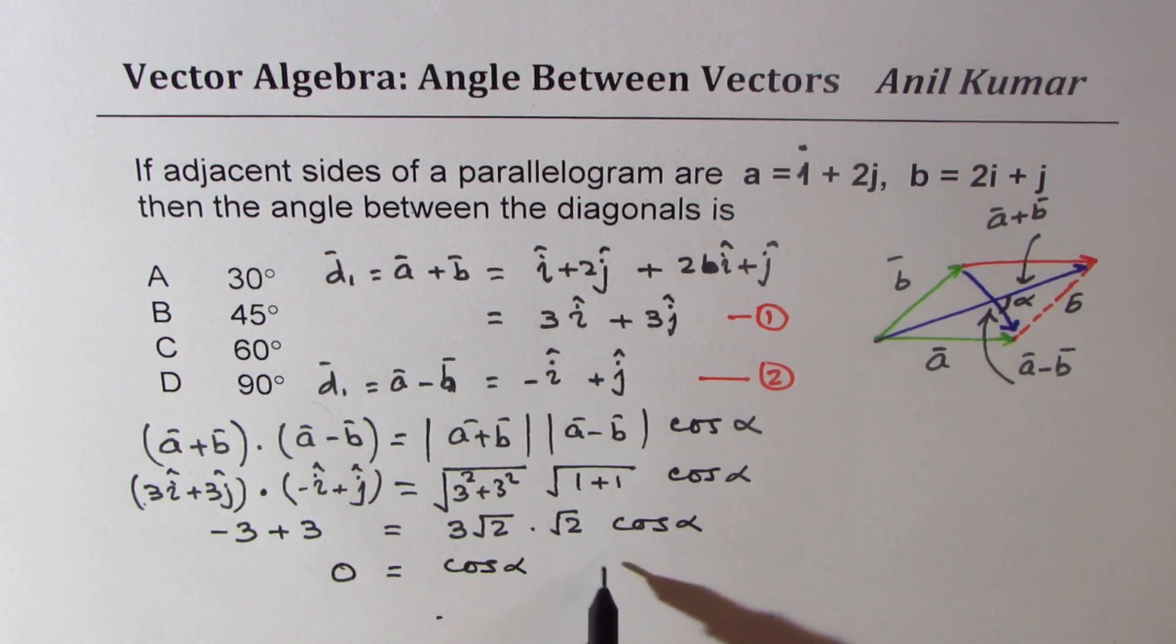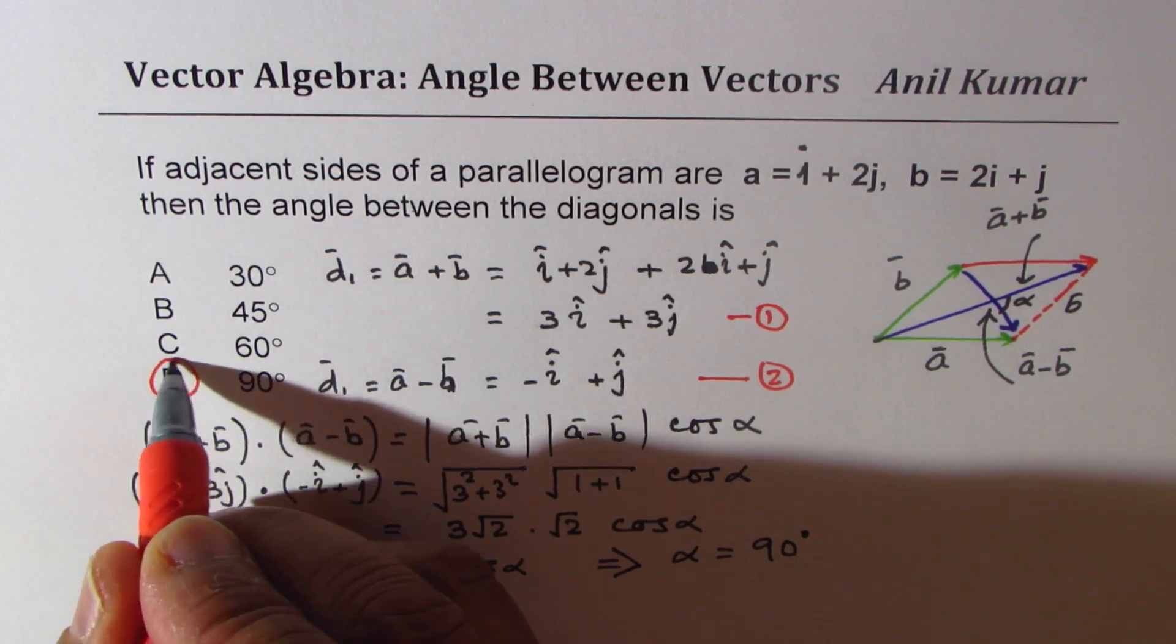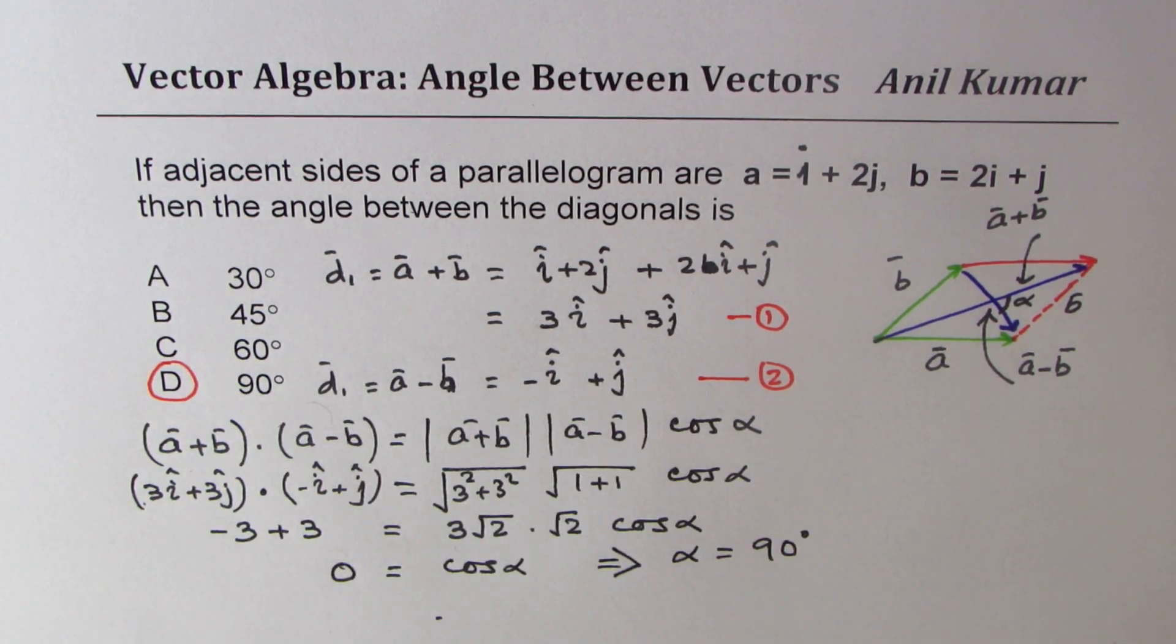Now since this side is 0, we know cos alpha should be equal to 0. That clearly indicates that alpha should be equal to 90 degrees. So option D is the right option for us, which is 90 degrees. 0 divided by everything will give you 0, and cosine function is 0 for angle equals to 90 degrees.